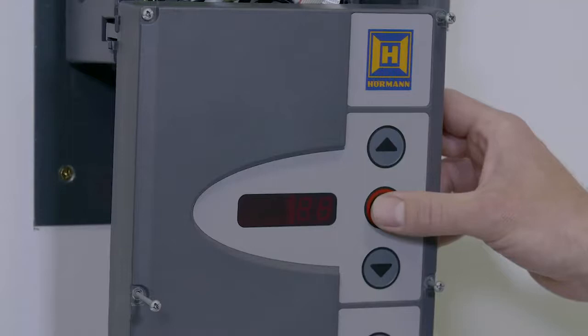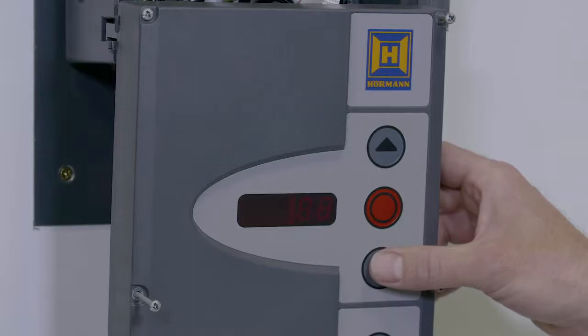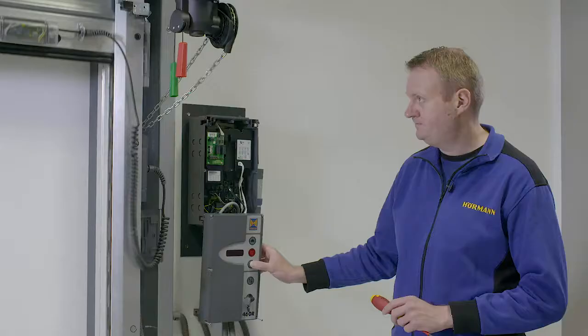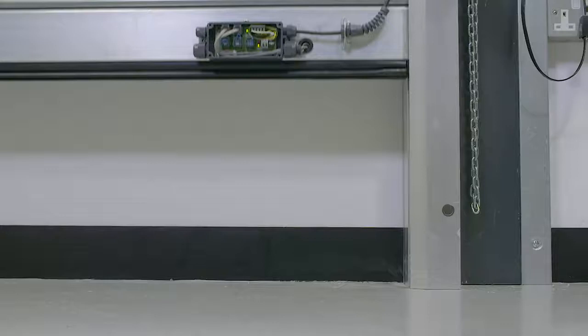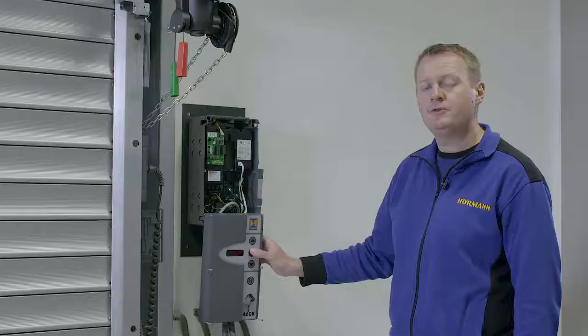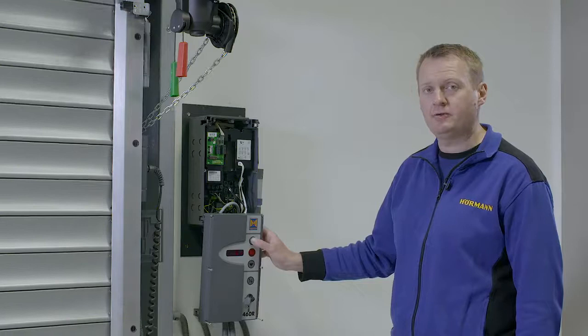The control panel will then ask you to set the safety cutoff point. We then close the door to 35 millimeters from the floor. In this mode the door can be opened and closed. Press the stop to save the position.